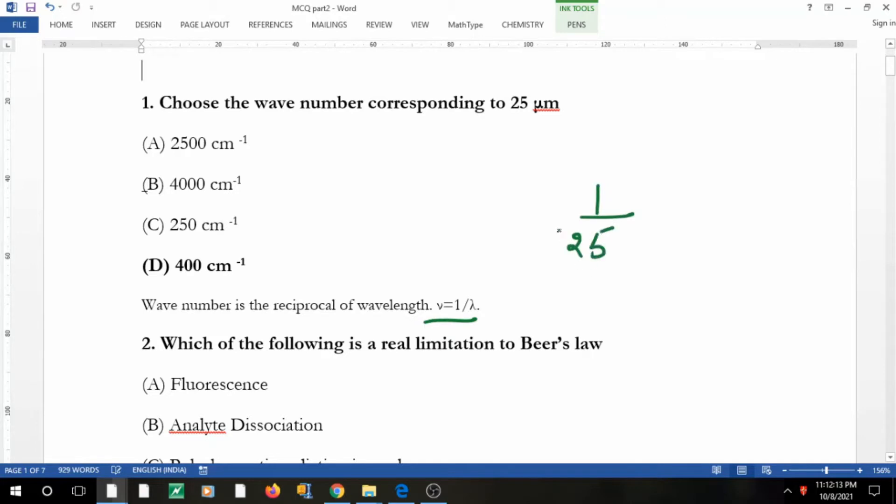The answers are in centimeter inverse, so 1 mu is 10 to the power minus 4 centimeters. If I multiply by 10 to the power minus 4, I get that in centimeters. If I solve this, I'll get 400 centimeter inverse.